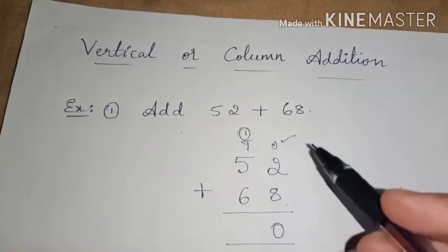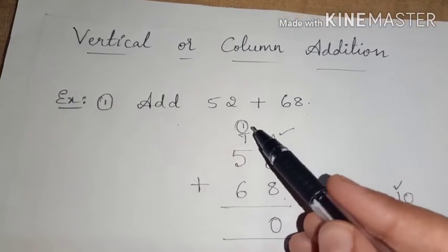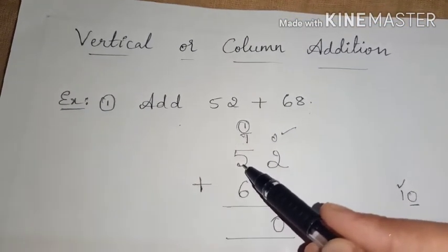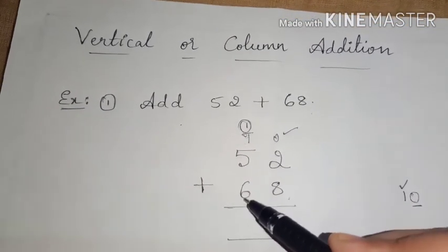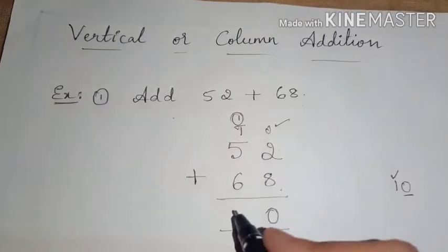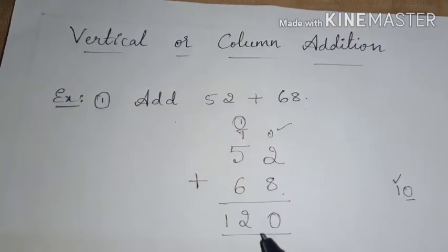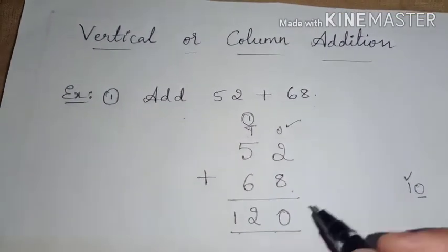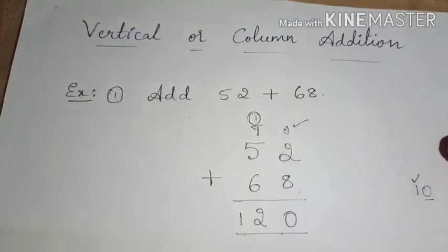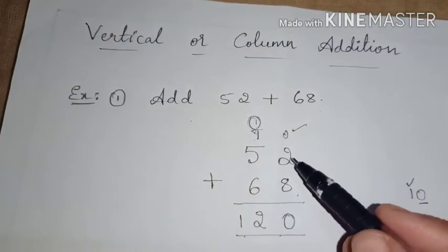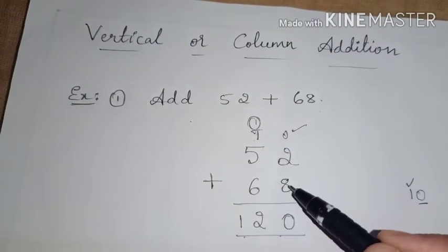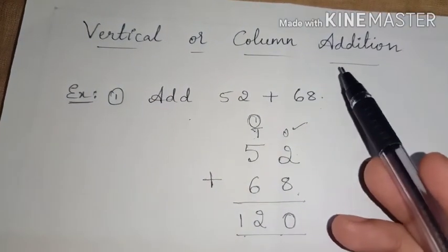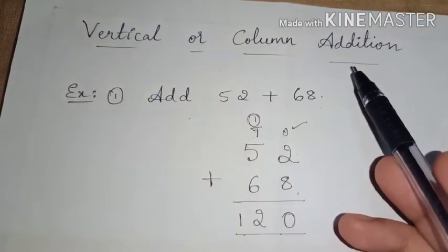Now add the tens place. Carry 1, plus 5 is 6, and 6 plus 6 is 12. So the answer is 120. Writing the numbers one below the other and adding is called vertical or column addition.